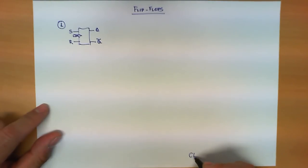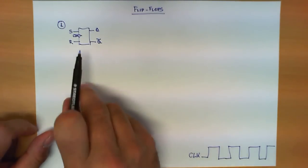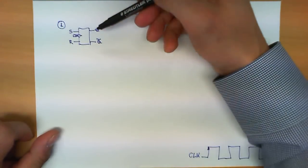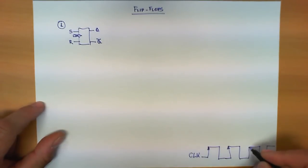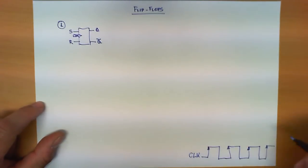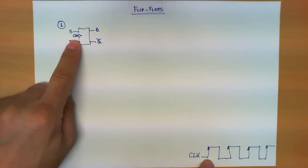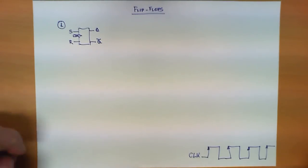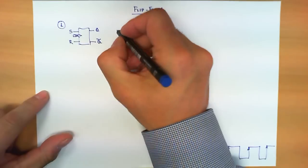The clock is a signal that has a periodic square-wave shape. This circuit will make a transition — meaning the value of Q and Q-bar will change — but only when two conditions are given: certain values of S and R, and most importantly when the clock makes a rising edge transition. The truth table or characteristic function of how this circuit works is represented as follows.